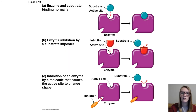Here is our overall picture showing how our enzyme is supposed to work properly with its substrate, the inhibitor binding by mimicking the substrate, and then the inhibitor binding to a different spot and changing the shape of the active site.